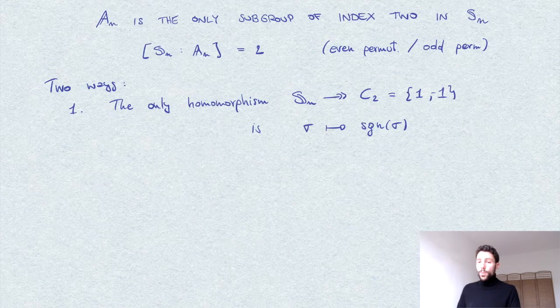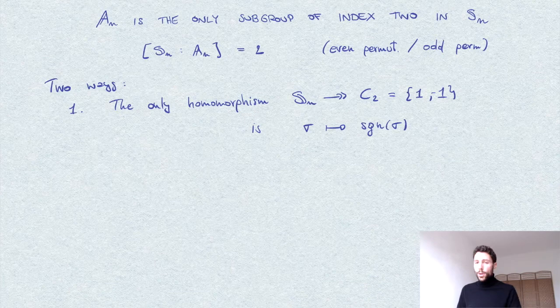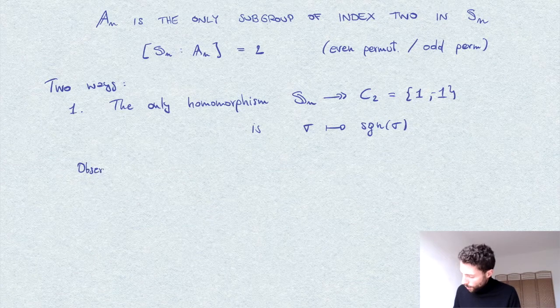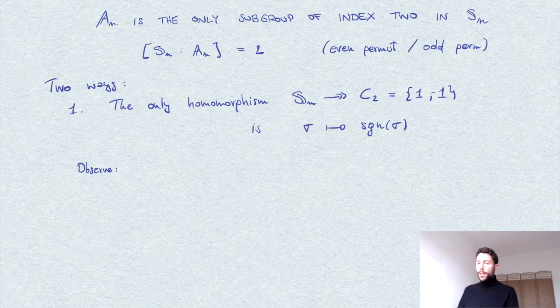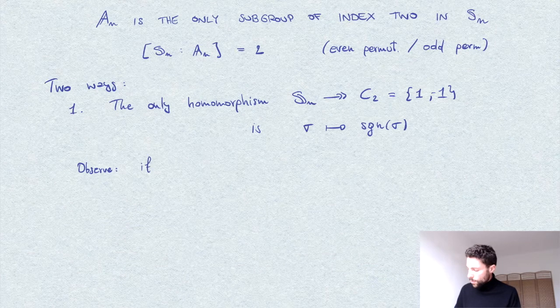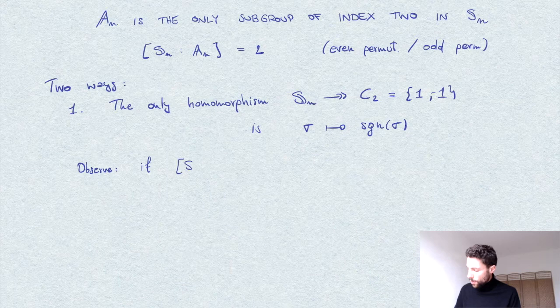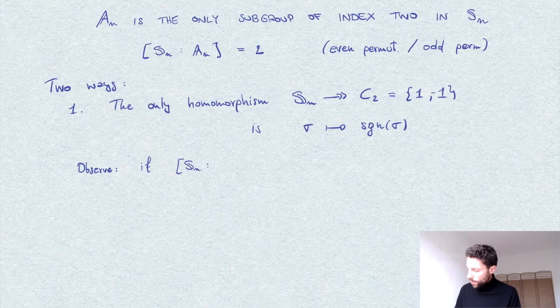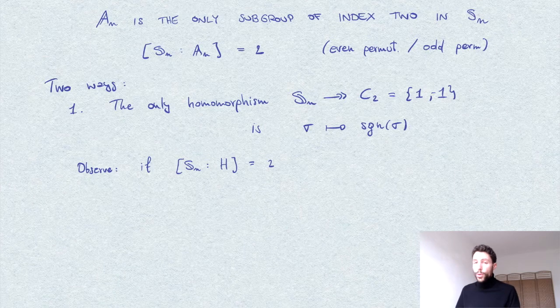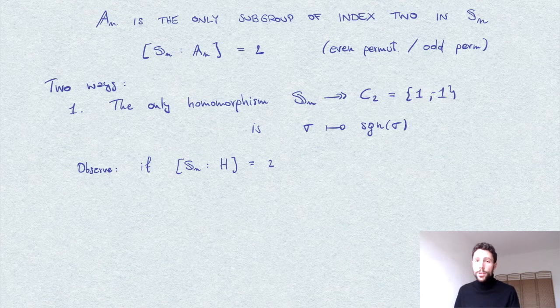So why would this be enough to show what we want? Well, we observe that if we take a subgroup of index two, say if H is another subgroup of index two of S_n, then we know that all subgroups of index two are normal.